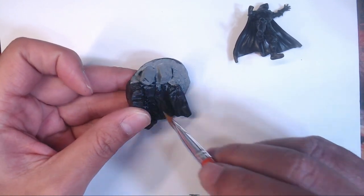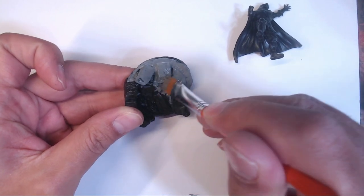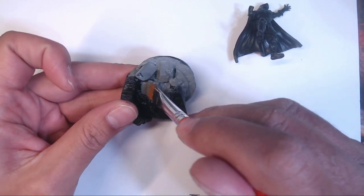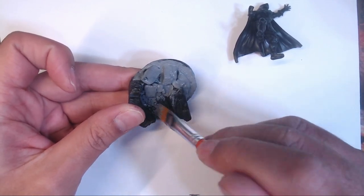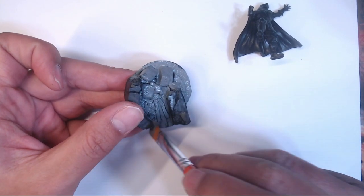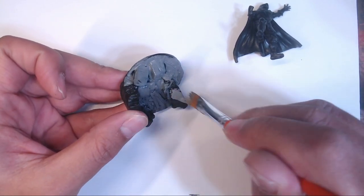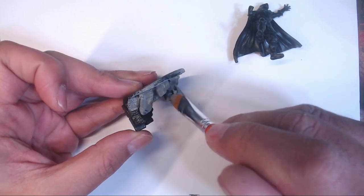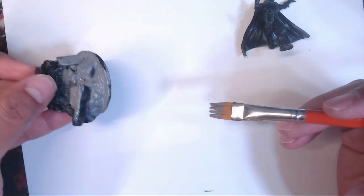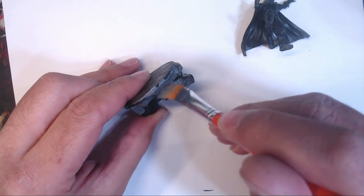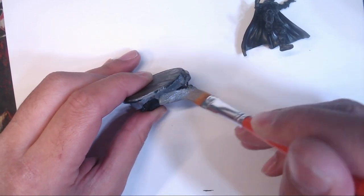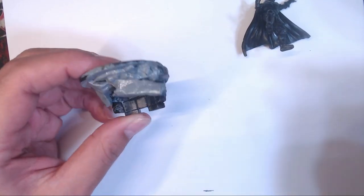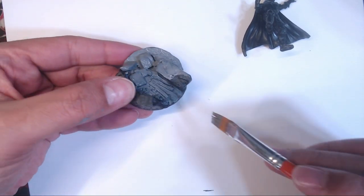To start, I've primed the figure and based in black to give me a good starting point. First, let's tackle the base. Looking at it, the base is mostly stone with a couple of wood planks, so I gave it a base coat of Vallejo Cold Gray. There's not too much thinking in this step, just get the paint on the plastic. I don't even bother trying to avoid the planks, as the gray base will make it easier to paint them brown later.